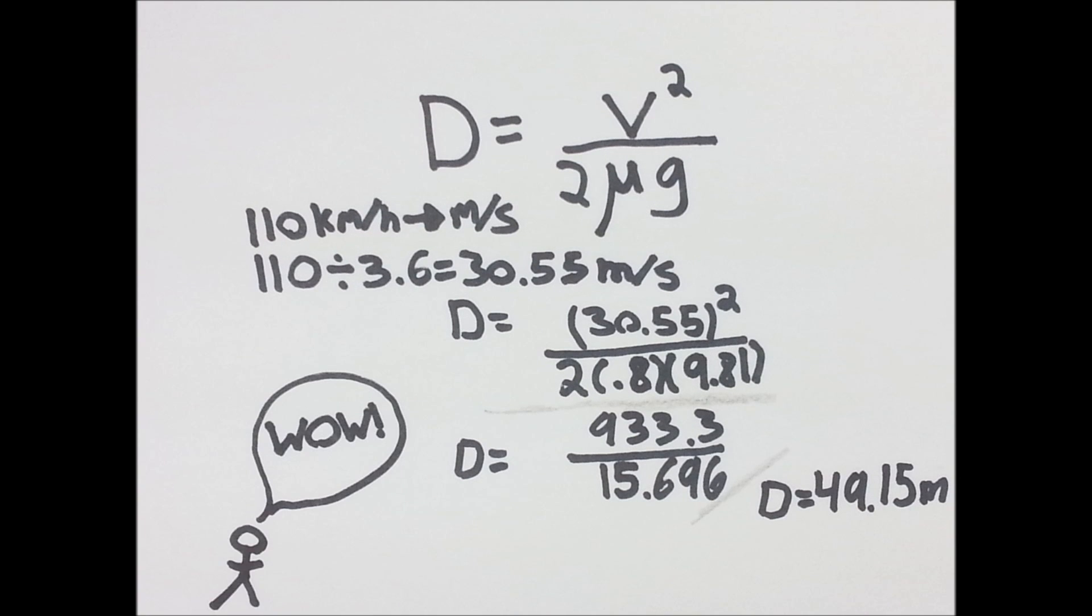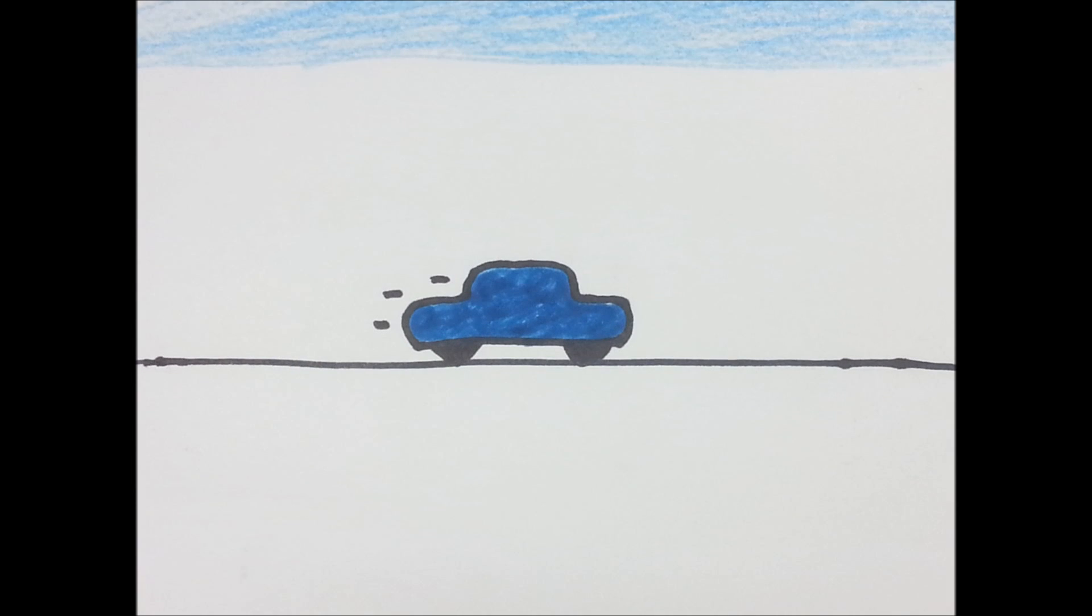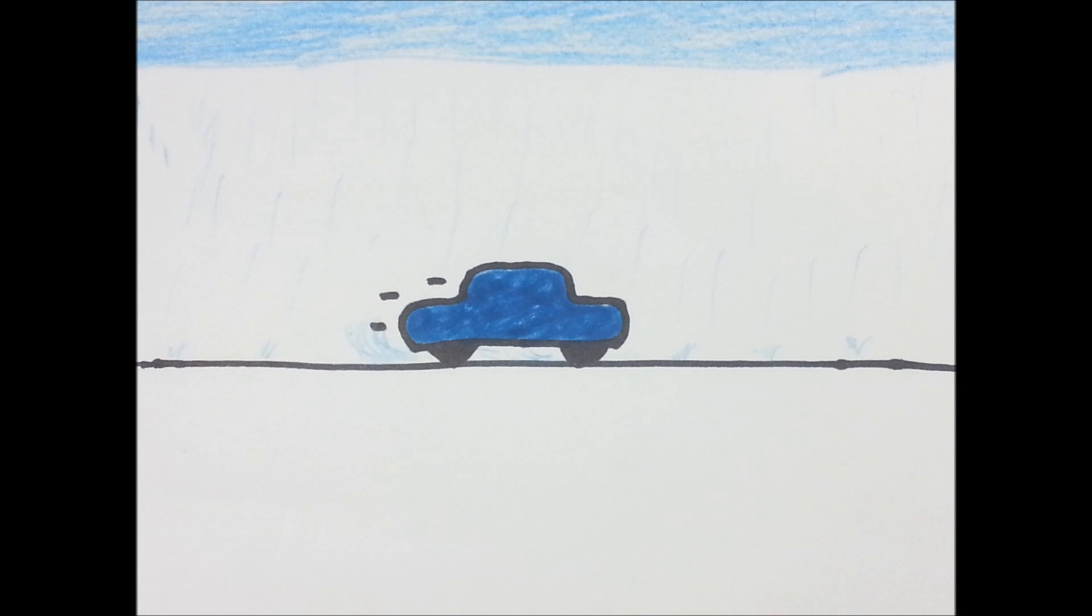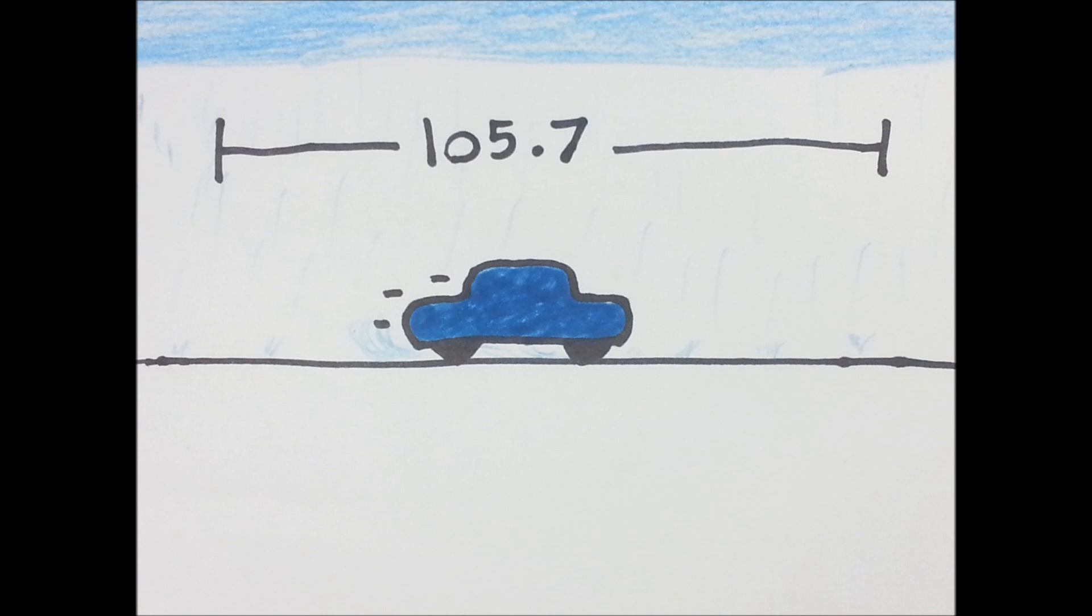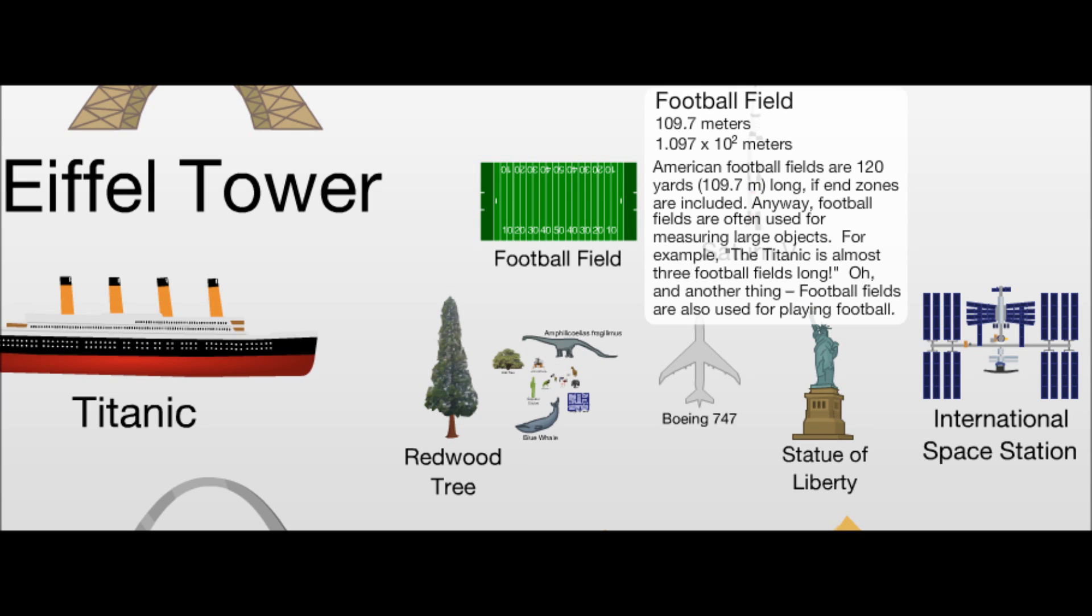Now let's get even crazier. If it's raining outside and the roads are wet, this number gets even higher. Wet cement and rubber only have a coefficient of friction of 0.45 instead of 0.8. After doing the math, a car going 100 kilometers per hour on wet cement slides 105.7 meters after braking. That's almost the length of a football field.